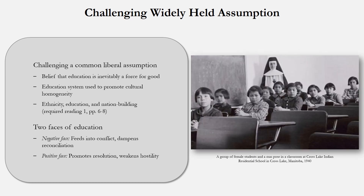For example, we see here an archival photograph of an Indian residential school in North America, to which the authors briefly allude on page six. We talked about this in week one, with the whole 'kill the Indian, save the man' logic epitomized by the founder of the Carlisle Indian Industrial School in Pennsylvania. The authors of reading one are thus reminding us that education is no panacea, and that rather than acting as a stabilizing force for peace, formal education systems can actually reproduce and even exacerbate conflicts — speaking of the two faces in the title of reading one. If the positive face of education is constructive in promoting peace, then the negative face is socially destructive, not just in terms of destroying others, but in destroying the very ideas of coexistence and reconciliation.